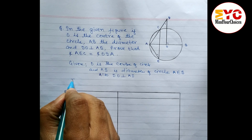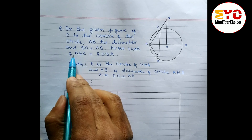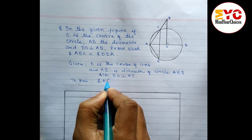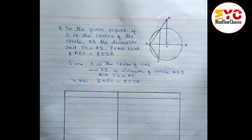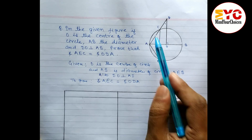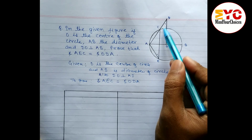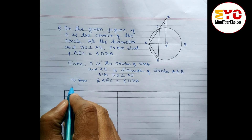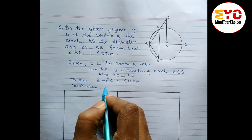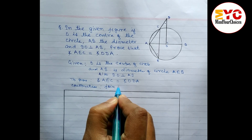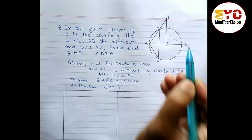To prove: we have to prove that angle AEC equals angle ODA. For construction, we join BC. So we draw a line joining these two points B and C.